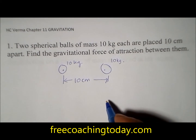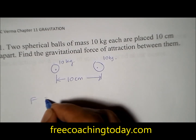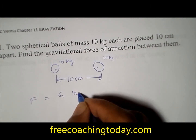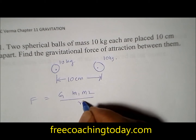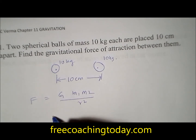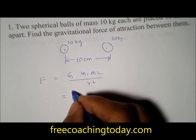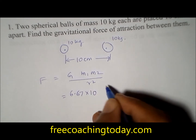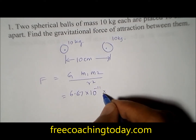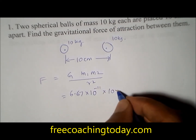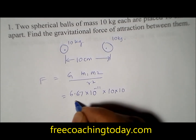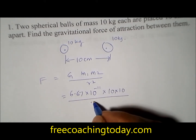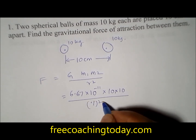The force of attraction is given by F equal to G M1 M2 divided by R square. G is a universal constant with value 6.67 into 10 to the power of minus 11, M1 is 10 kg, M2 is 10 kg, and R square is 0.1 square.